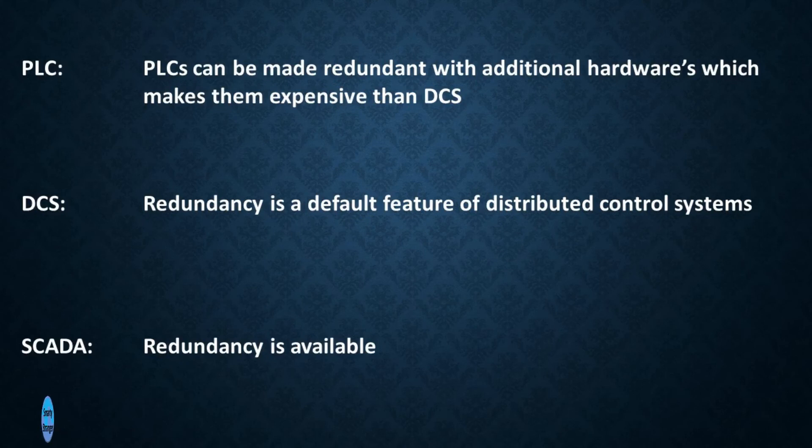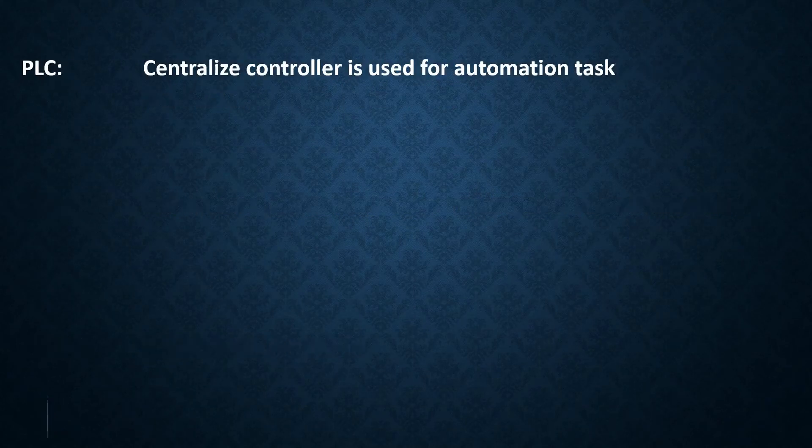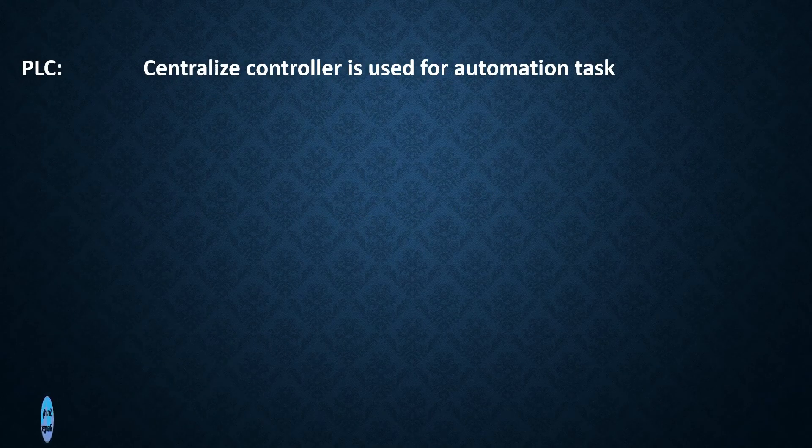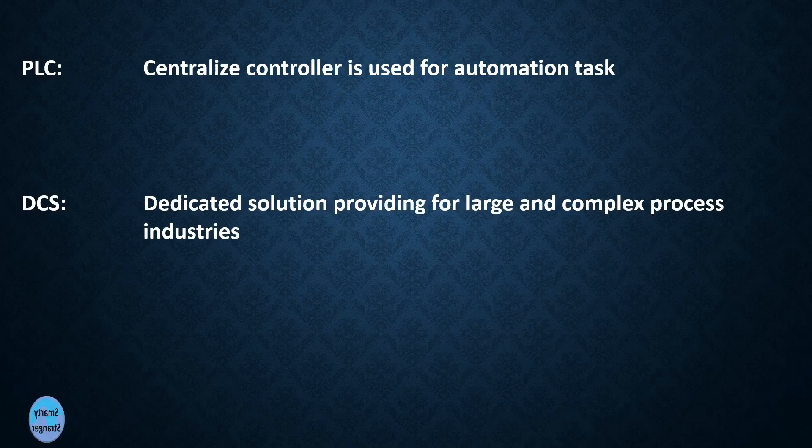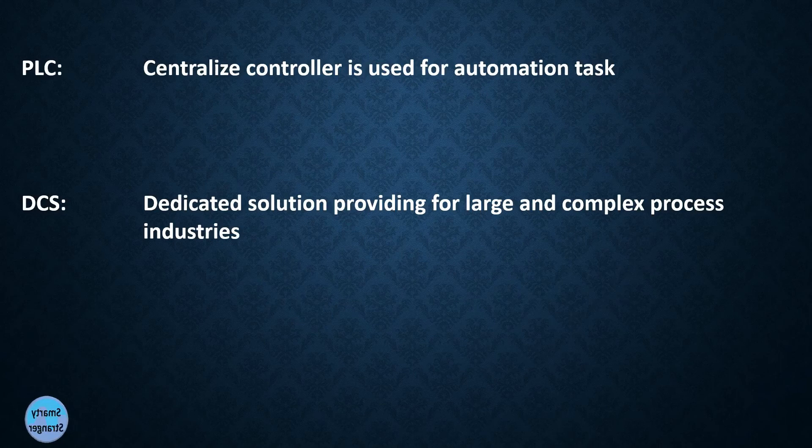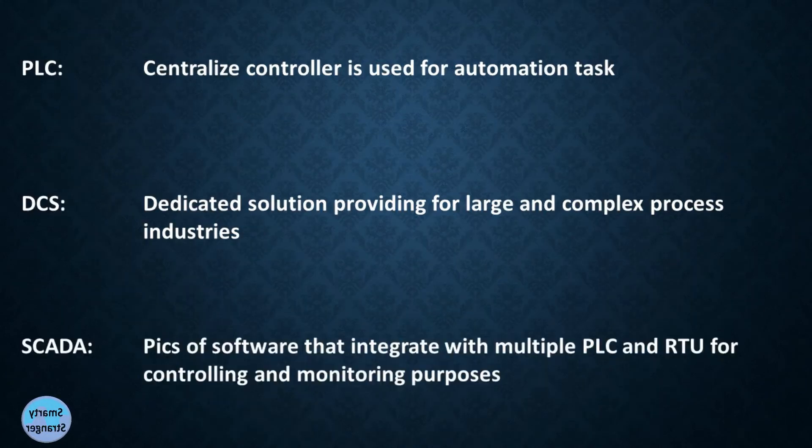Redundancy is also available in SCADA systems. In PLC, centralized controller is used for automation tasks, whereas in DCS, dedicated solutions are provided for large and complex process industries. In SCADA, it's a piece of software that integrates with multiple PLCs and RTUs for controlling and monitoring purposes.